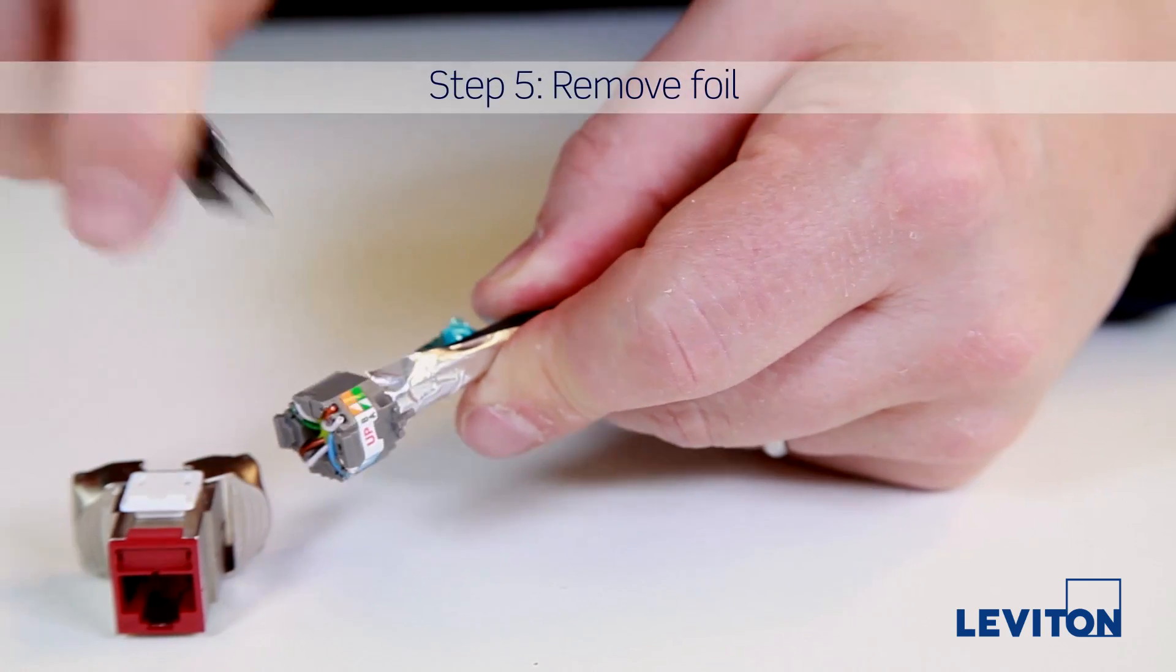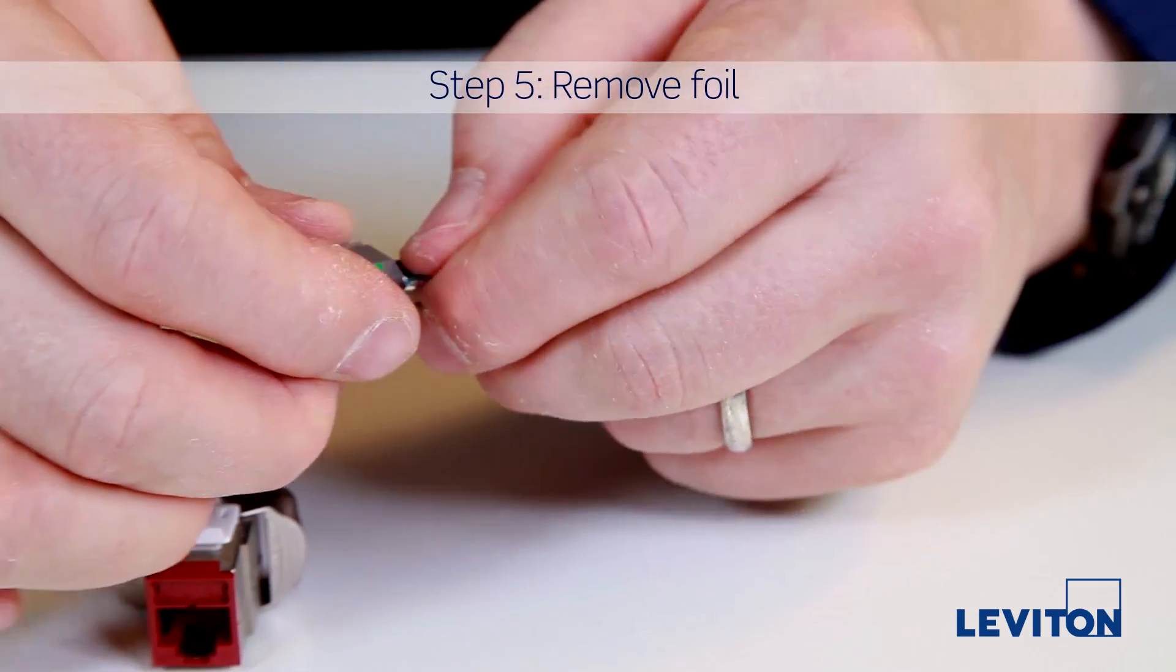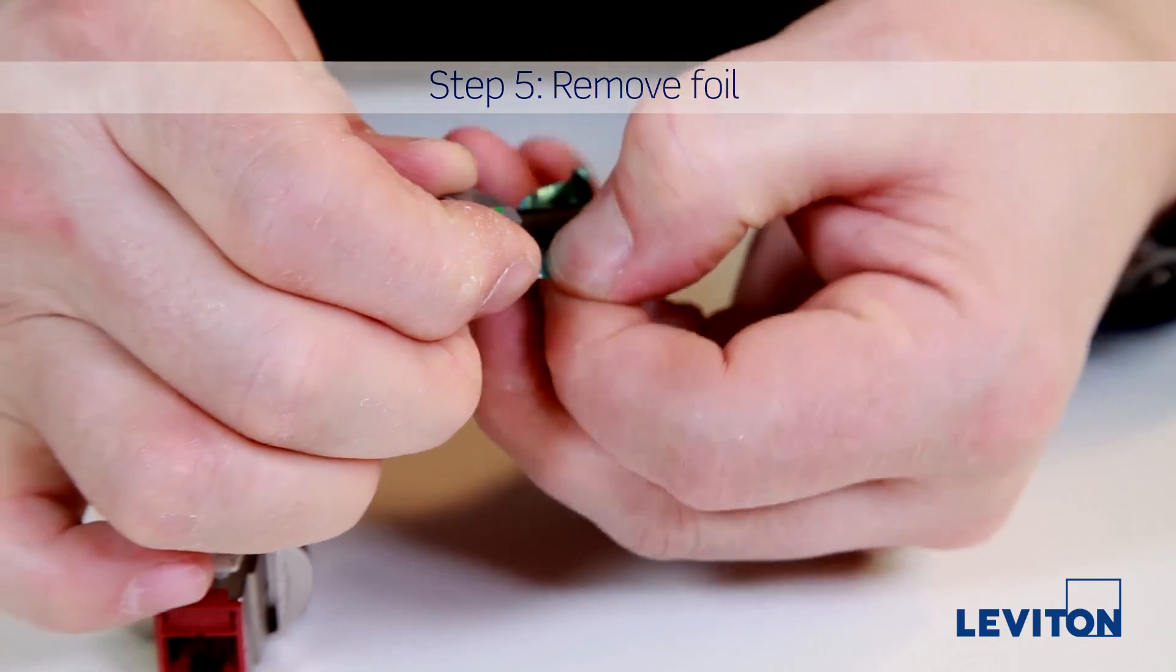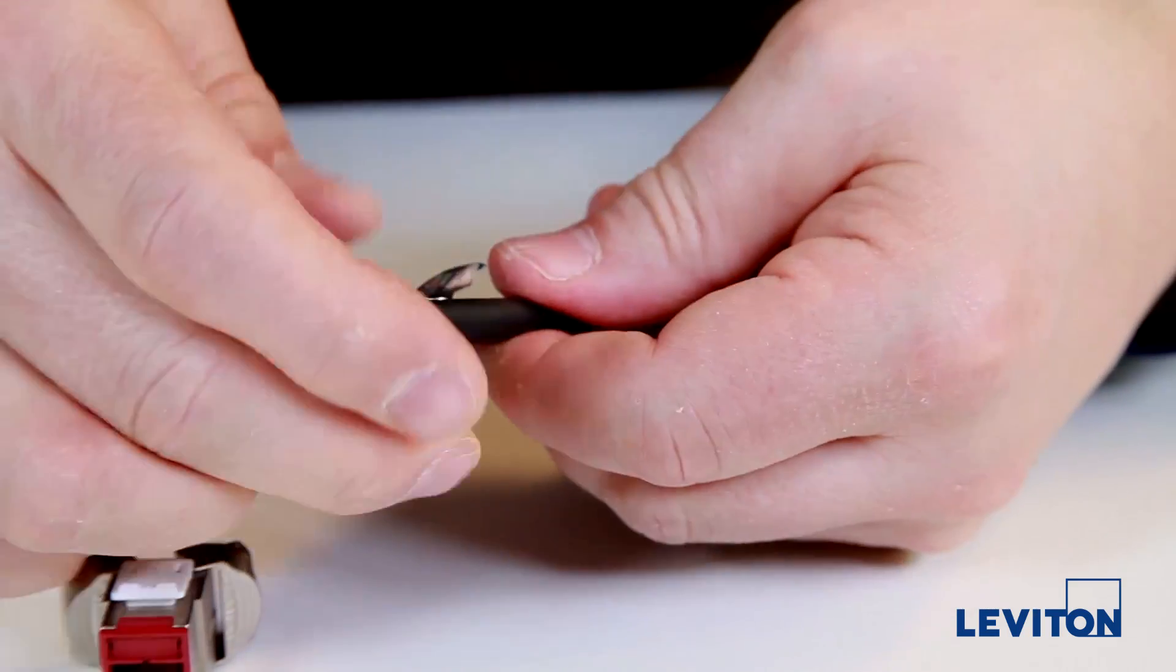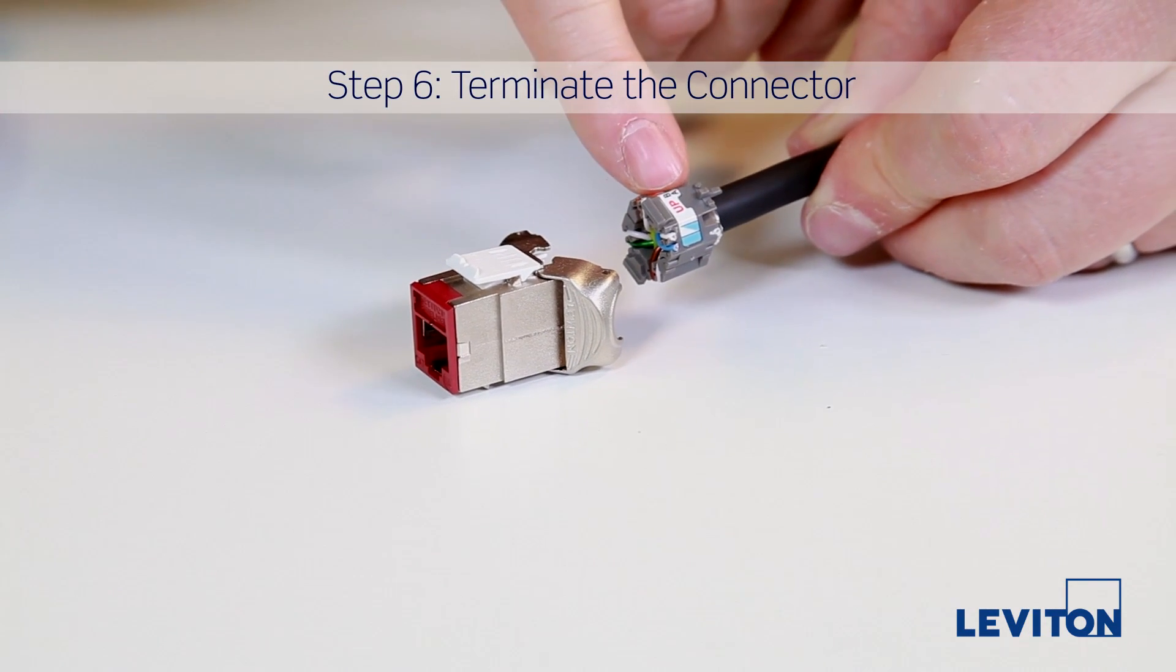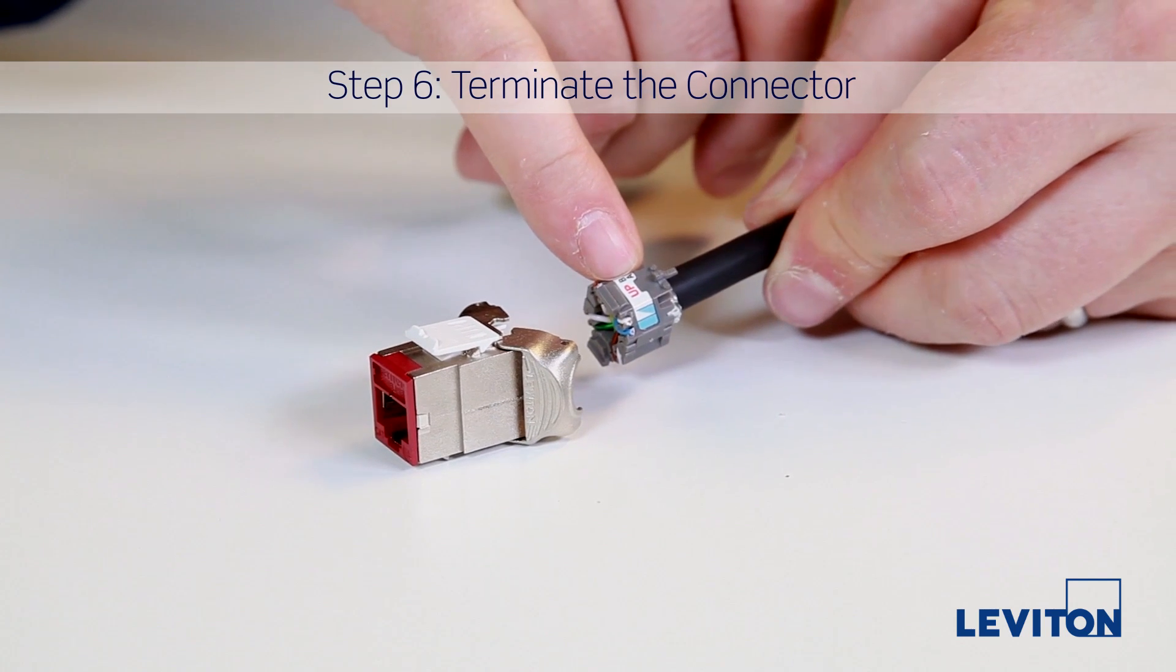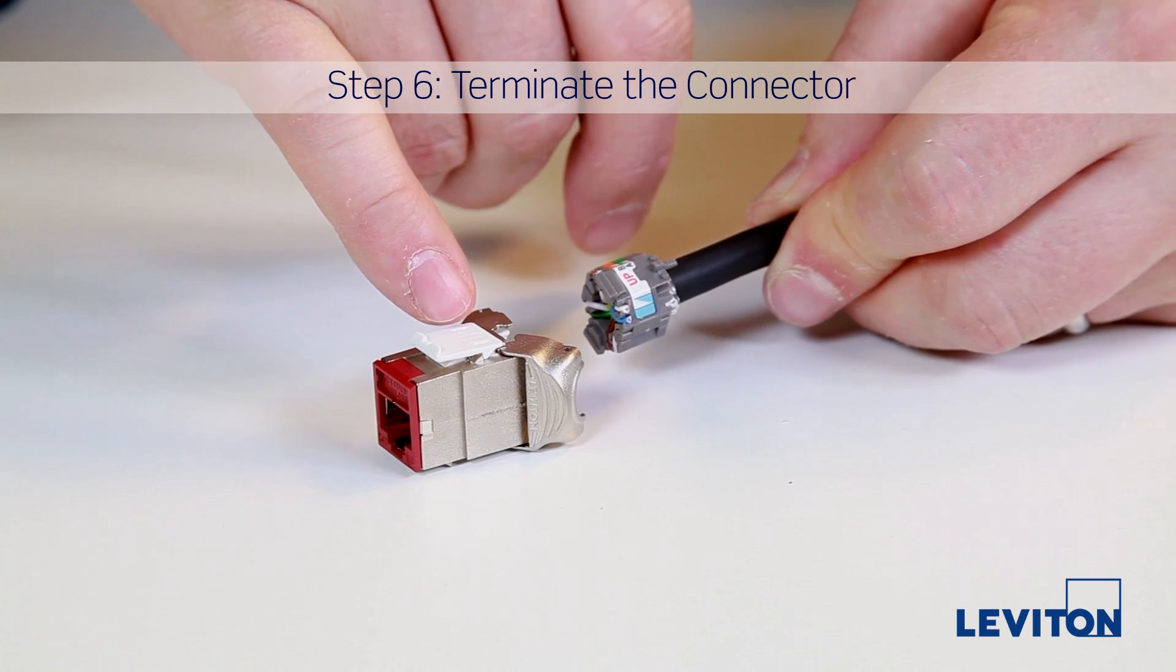Now nip the foil at the rear of the wire manager with your flush cutters and tear it away. Line the up indication on the wire manager with the up indication molded on the connector, and then insert the wire manager into the connector.